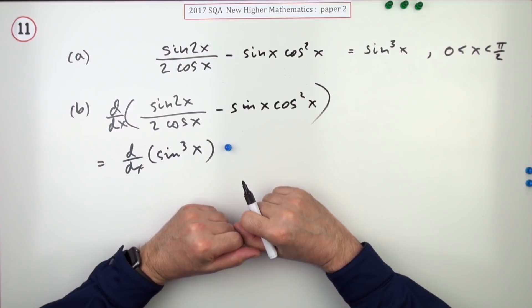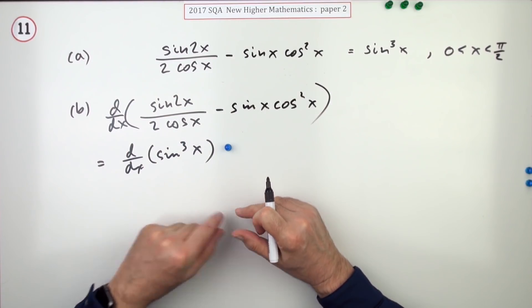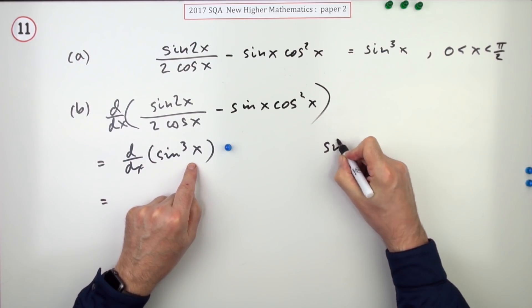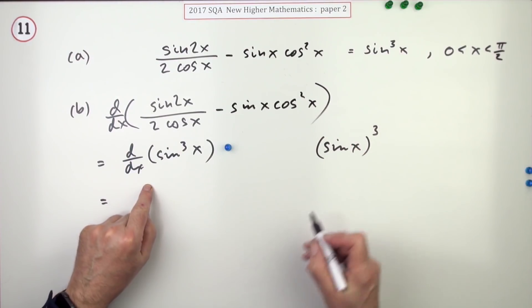Knowing to change it, which is staring in the face there, gets you a mark. Now what's the derivative? Remember, sine cubed x is a function of a function. That's sine x all cubed. So the derivative of that will be the outside first, three times whatever it was squared.